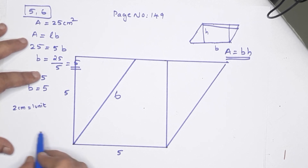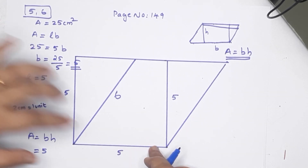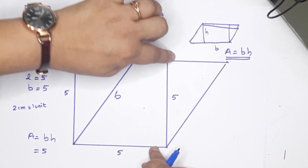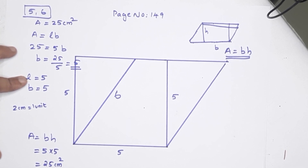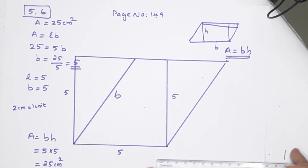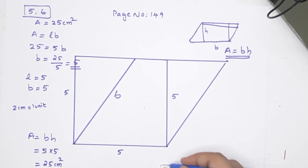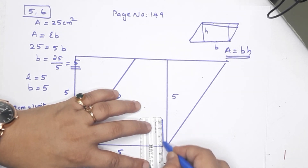This is the area equal to base into height. The height is equal to 5. The base is equal to 5. The base is equal to the opposite side. 5 into 5 — that means 25 cm². The unit is correct. There are 5 units, so the unit is correct.